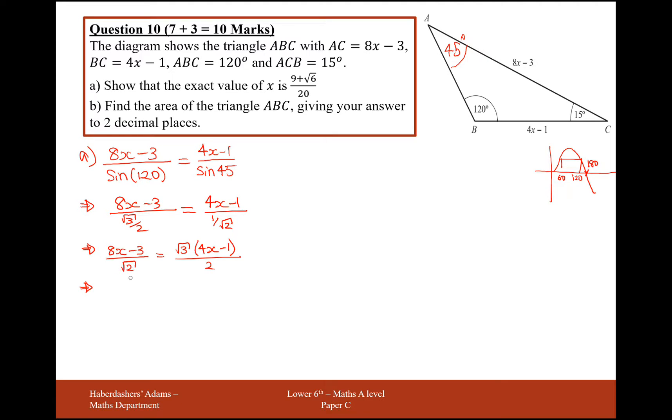This is going to affect this down here. So it's going to have 2 over root 2. That will cancel down to just root 2 on the top. And 8x minus 3 on the top there, and times it by 2 on the right-hand side is root 3, 4x minus 1.